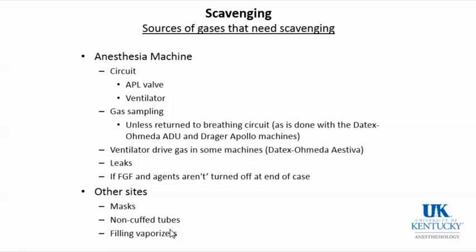There are many ways gases can leak into the environment: the pop-off valve, the ventilator, gas sampling, leaks, masks, non-cuffed endotracheal tubes, and when filling the vaporizer. Modern vaporizers tend to be closed systems so the leak at filling is minimal, but in the past that was a potential problem.